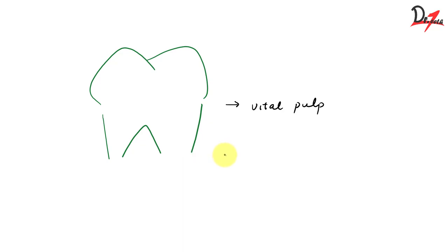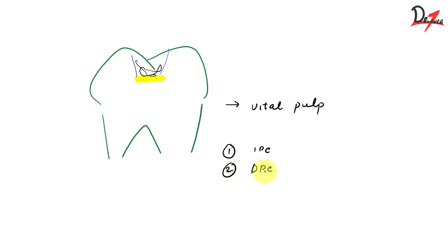There are various methods by which we can do apexogenesis. First, indirect pulp capping: you remove the caries, seal the remaining dentine with a pulp capping material, then do a GIC or composite filling over it. The idea is to secure the pulp and maintain its vitality. Next is direct pulp capping: if the pulp is vital and not irreversibly inflamed, the caries is excavated, the bleeding from pulp exposure is controlled, and a direct pulp capping material is utilized to secure a healthy environment for the pulp to grow.